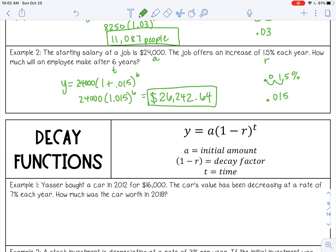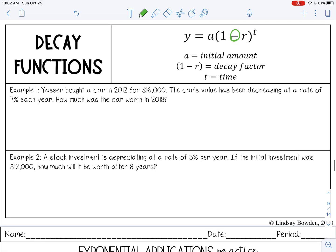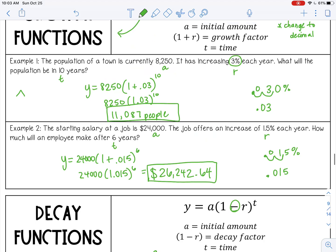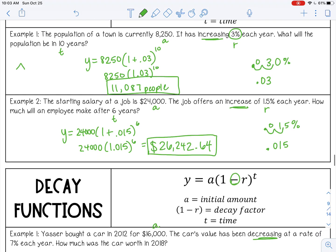Now decay is very similar. The only difference is instead of an addition sign in the parentheses, you're going to have a subtraction sign. Example number one: Yasser bought a car in 2012 for $16,000, that's our A. The car's value has been decreasing at a rate of 7% each year. So that's how you know it's a decay function - you see that word decreasing. In the other problems I saw increasing, so that's growth. This one's decay.